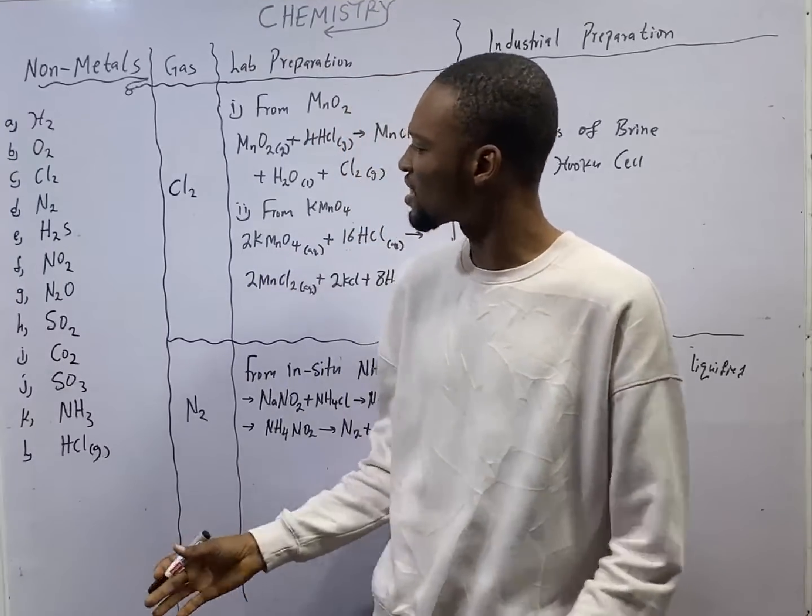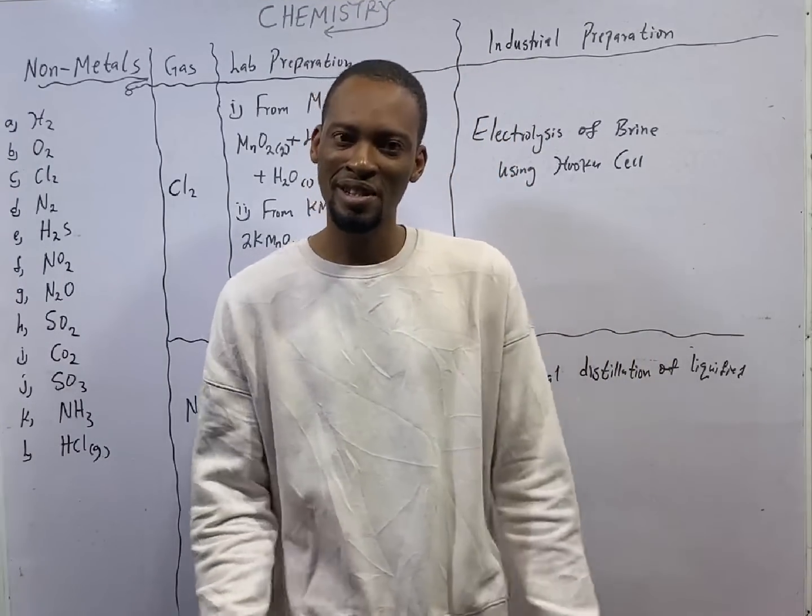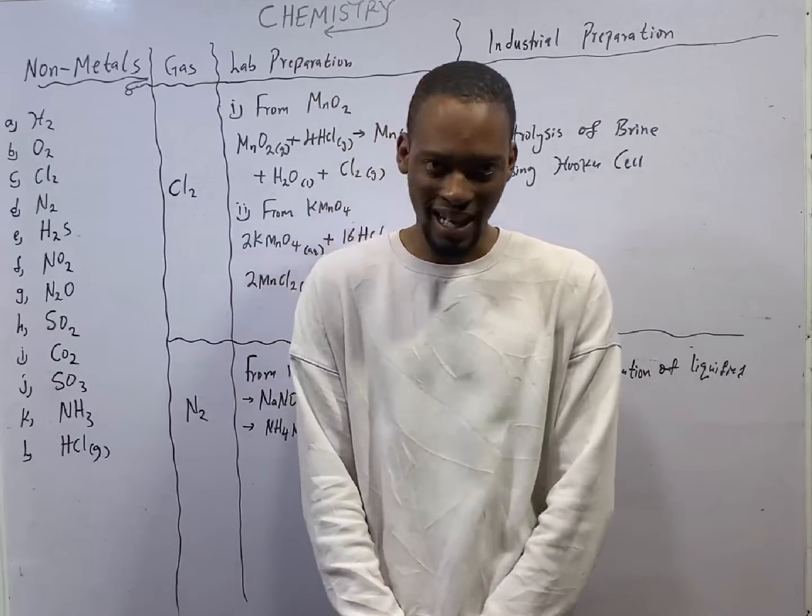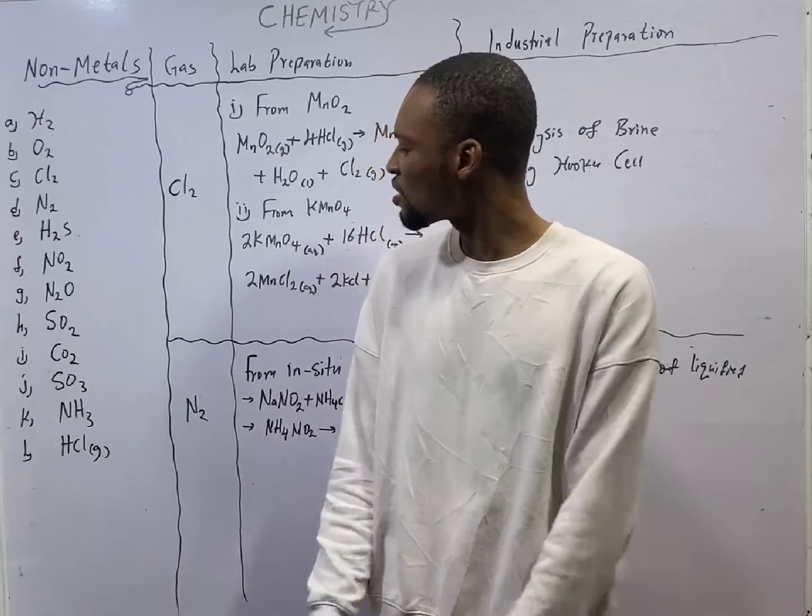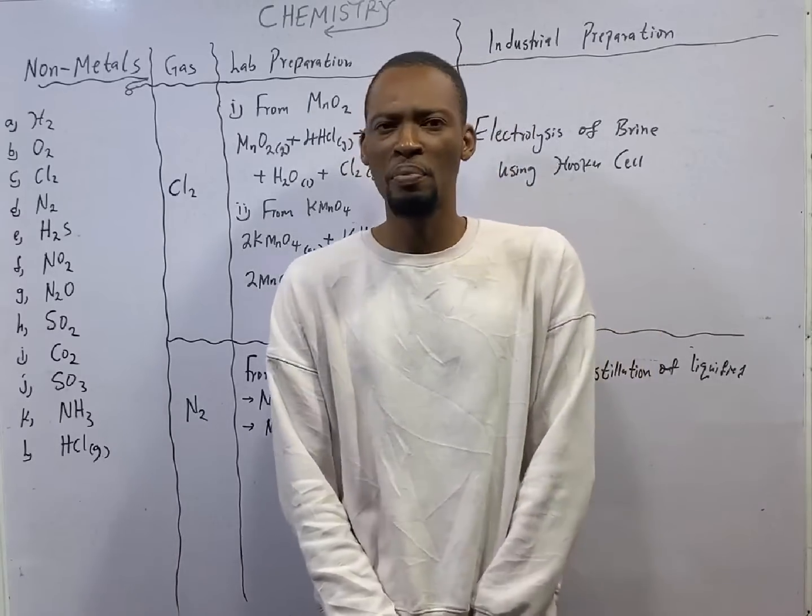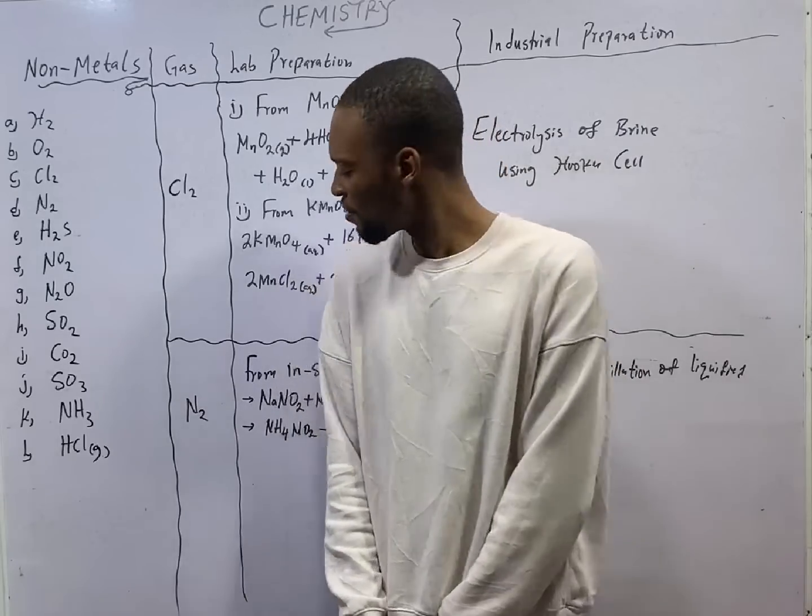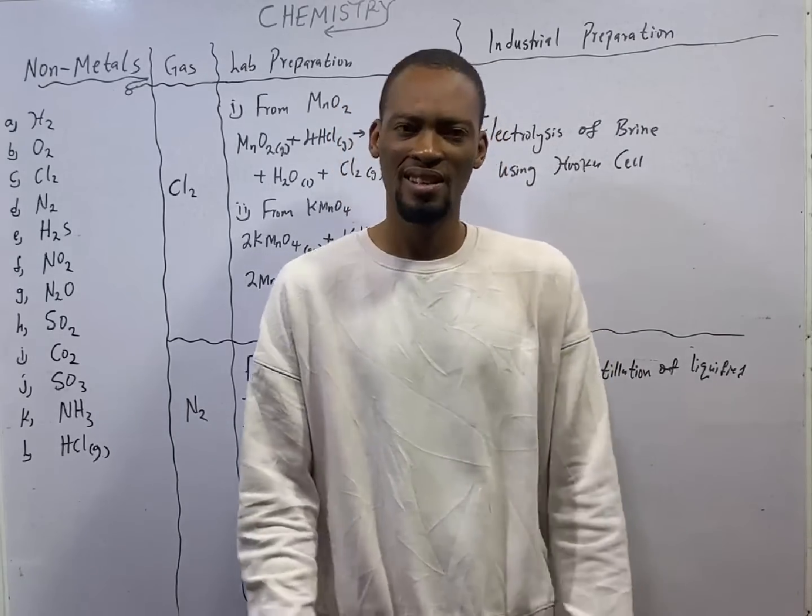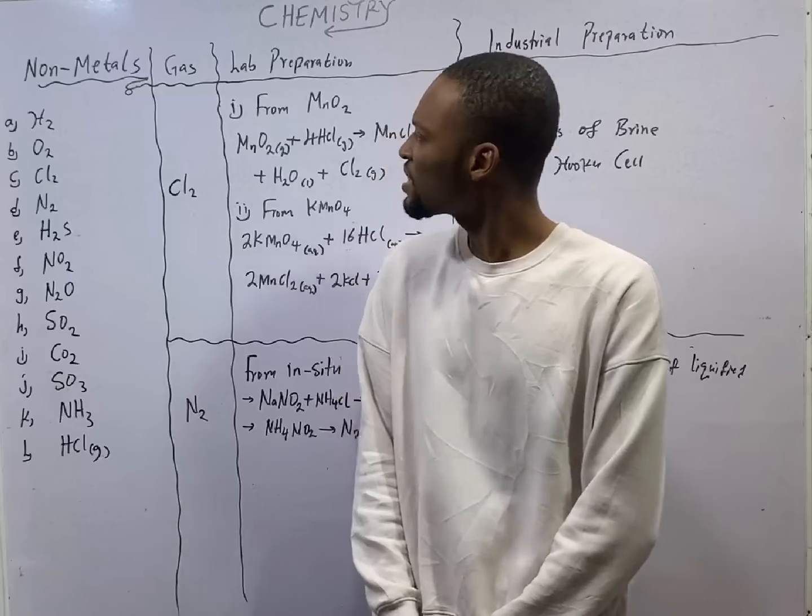This is episode number 46 of the 120 days to JAMB chemistry with Flash Isaac. In this episode, we shall be looking at the preparation of chlorine gas and the preparation of nitrogen gas.